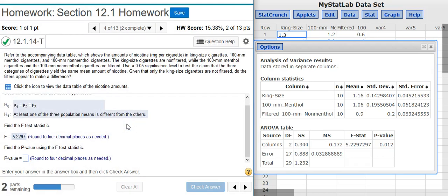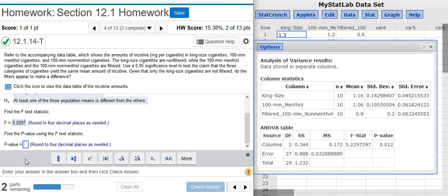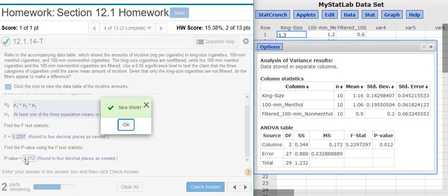The next part asks me to find the P-value, which is right next door to my F-statistic in my ANOVA table. Again, I'm asked to round to four decimal places. Nice work!